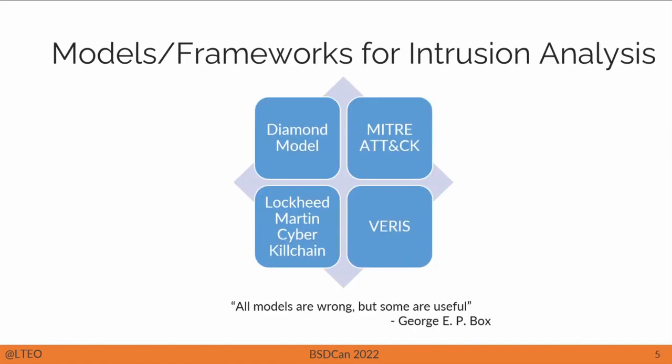There are various models and frameworks for intrusion analysis that are useful for threat intelligence. I've listed four here: the Diamond Model, MITRE ATT&CK, the Lockheed Martin Cyber Kill Chain, and the one from Verizon called VERIS. All these models are complementary to each other. None of them have the full view of any intrusion, but they're all useful. As the quote at the bottom says: all models are wrong, but some are useful.